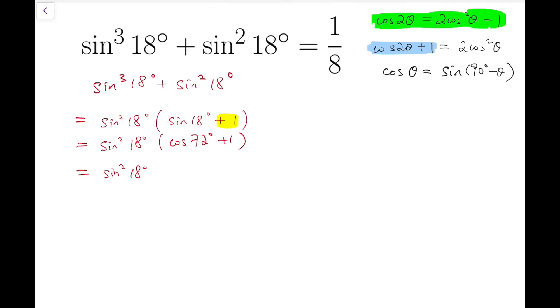So taking θ equals 36, and I am going to get 2 cosine squared 36 degrees. So if I rearrange that, I will have this.